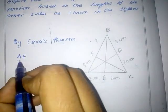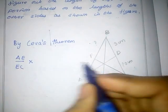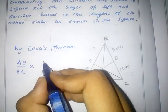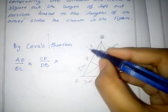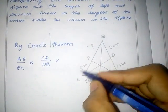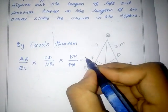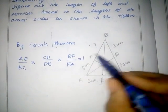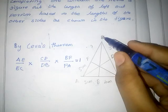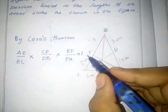By Ceva's Theorem, AE by EC into CD by DB into BF by FA is equal to 1. By Ceva's Theorem, AE by EC into CD by DB into BF by FA is equal to 1.